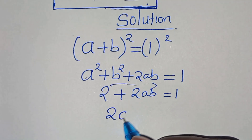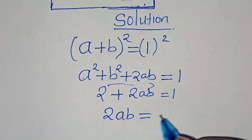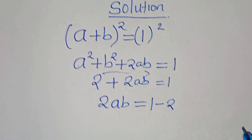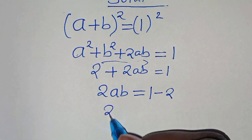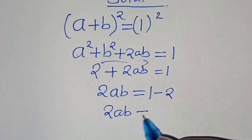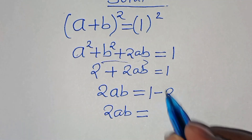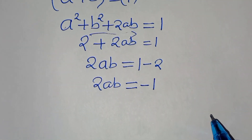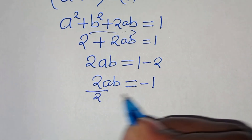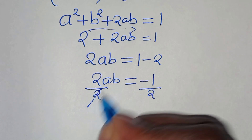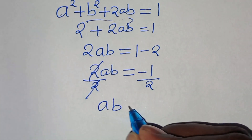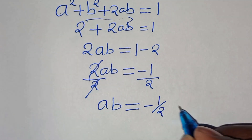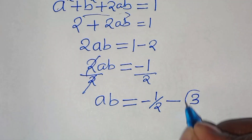So we have two times ab equals one minus two, which is equal to minus one. Dividing both sides by two, this implies that a times b equals minus one over two. Let's call this equation three.